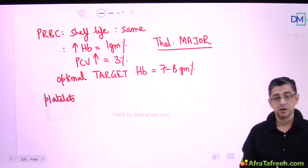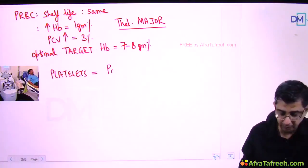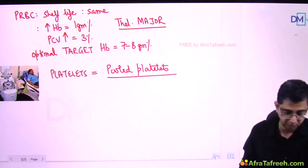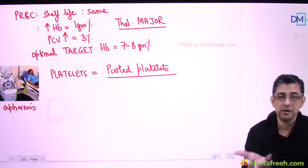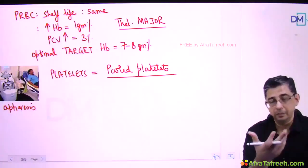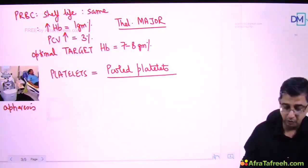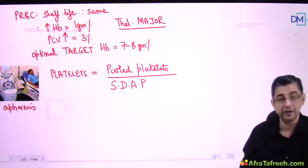Coming to the next component - platelets. There are two methods of generating them. One is the pooled method: pooled platelets from multiple donors with the same blood group. Another method is apheresis, where blood is removed from the donor's body, the machine returns the red blood cells, plasma, and white blood cells back into the body, but platelets remain behind. So there are two ways: pooled platelets and single donor apheresis platelets.